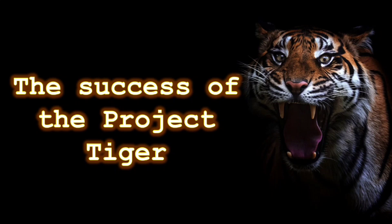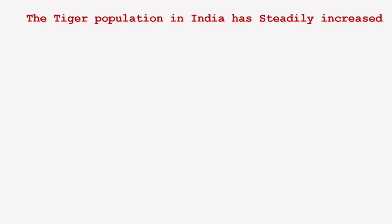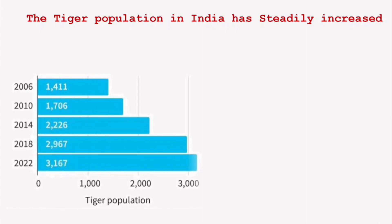Let's start today's session without any further delay. The tiger population in India has steadily increased after Project Tiger — the number of tigers has gone up. We can see this in the graph: on the vertical axis you can see the years 2006 to 2022, and on the horizontal x-axis you can see the tiger population. So year-wise we can see how the tiger population kept increasing.